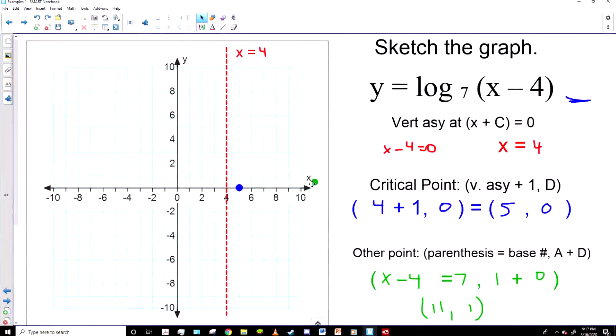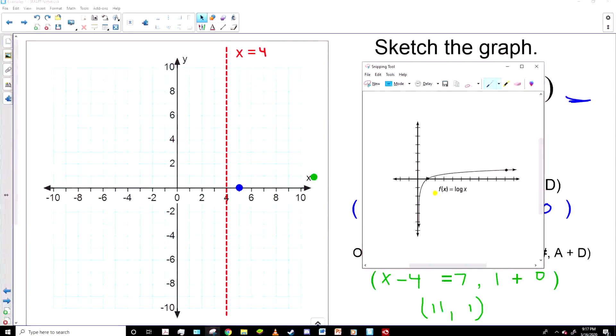So our second point is at 11, one, which is actually off our graph, but we can make it work.